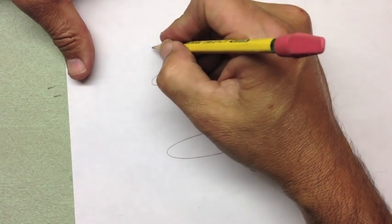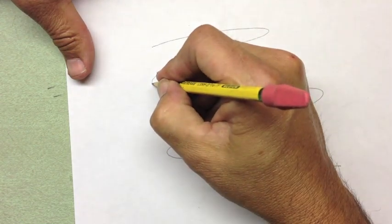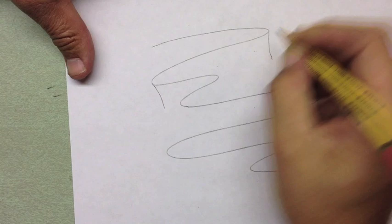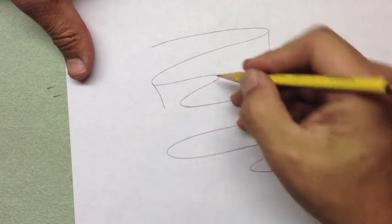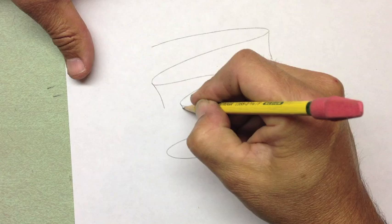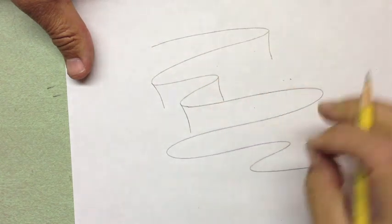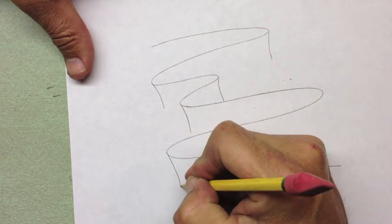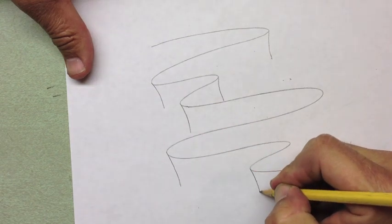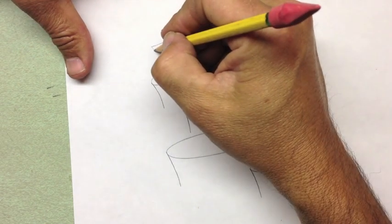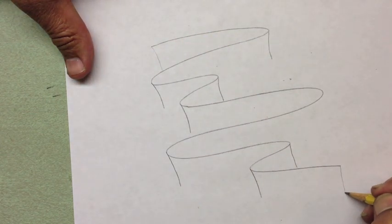Next thing we're going to do is at each little corner, each little hump that you see, each little bend, we're going to draw a line perpendicular to that. And you want to keep these about the same length. And on the ends, I'm going to do it really light. I'll show you why in a minute.